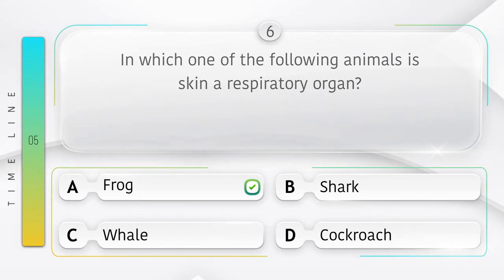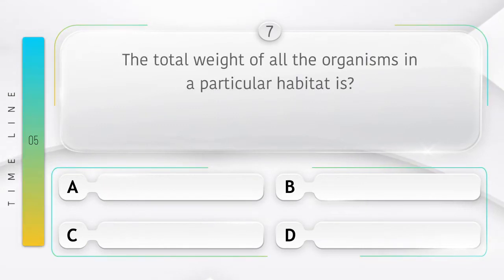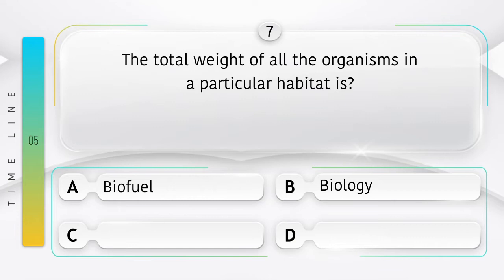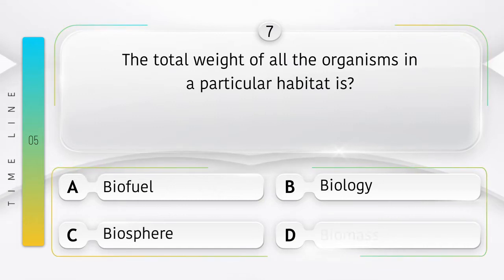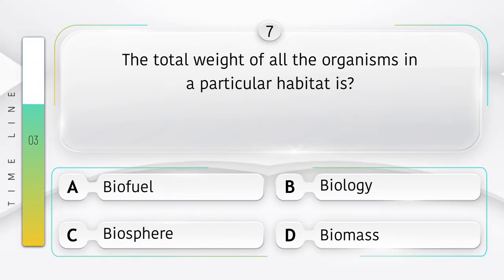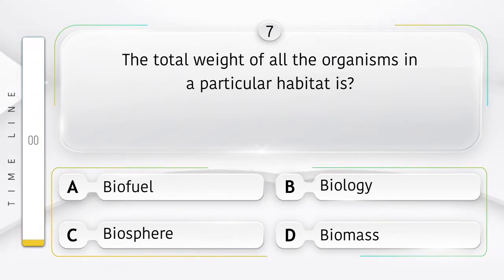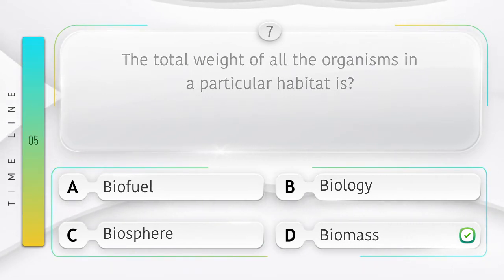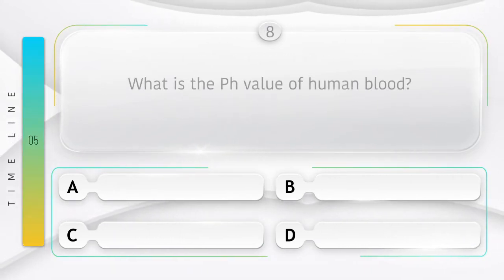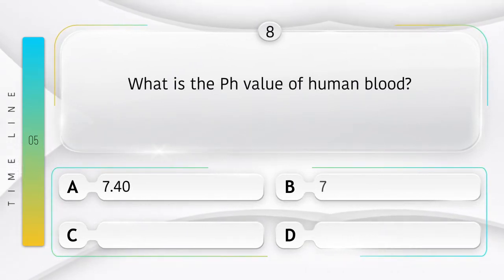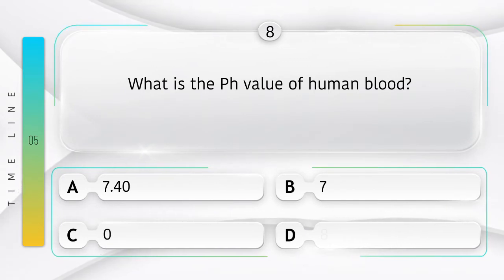The answer is option A, Frog. The total weight of all organisms in a particular habitat is called — options: A) Biofuel, B) Biology, C) Biosphere, D) Biomass. What is the pH value of human blood? Options: A) 7.40, B) 7, C) 0, D) 8.